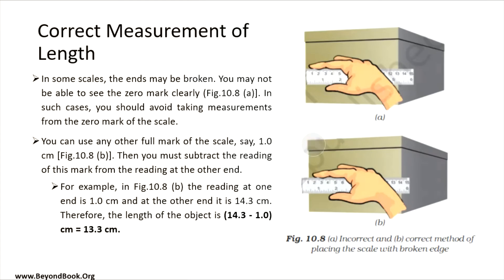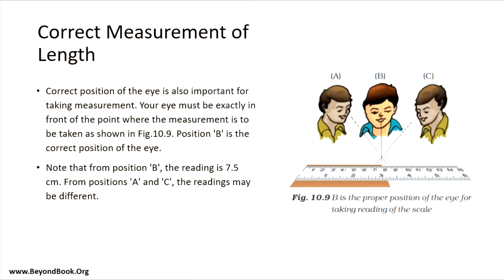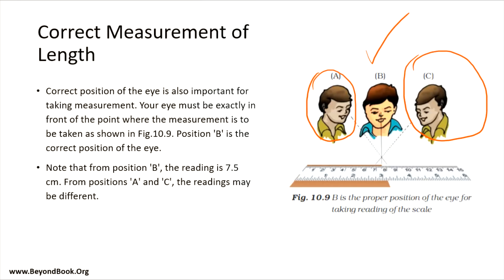Moving on — the correct position to observe measurements. For example, if you are measuring the length of a table, looking at the measurement from the side may give you the wrong reading. You should always look from the top position, just like boy B in the figure. This is the correct proper position of the eye for taking a reading from a scale.